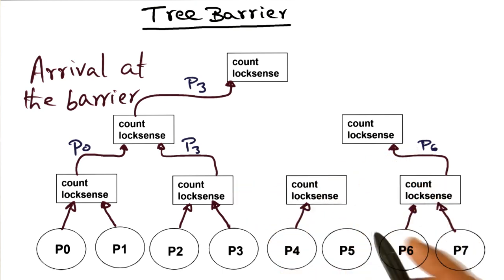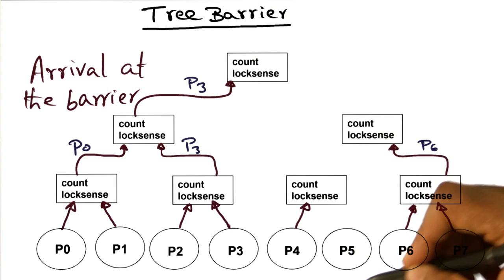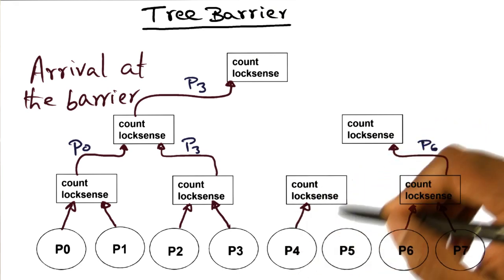So in the meanwhile, on this half of the tree, what's going on is that P4 has arrived, P5 is not there yet. P6 and P7 have arrived, and it turns out that P6 was the last guy to come to the barrier here, and therefore he's the guy that has moved up, and he has decremented count, and he's waiting for this half of the tree to arrive at the barrier.